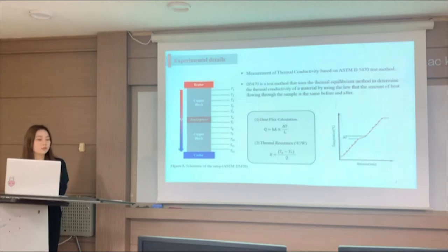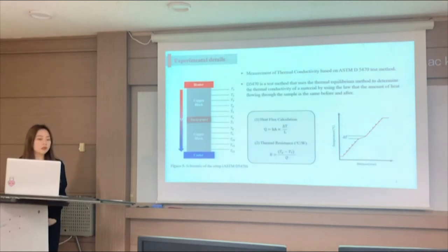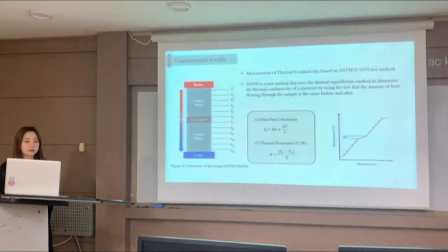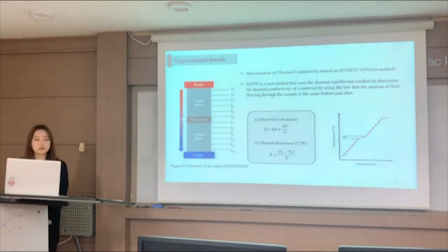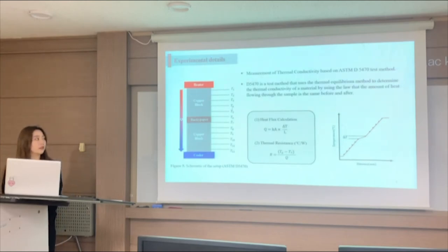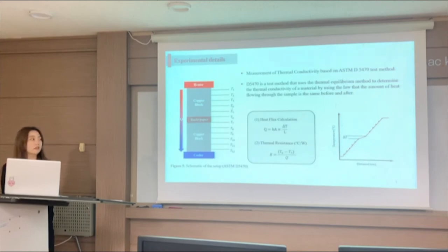The ASTM D5470 equation was used to calculate the thermal resistance value. ASTM D5470 is a test method that uses thermal equilibrium to determine the thermal conductivity of a material, using the law that the amount of heat flowing through the sample is the same before and after. As shown in Figure 5, we drilled six holes in two copper blocks including the surface, inserted thermal probes, and observed the temperature change. Heat is applied on the top and held on the bottom. When the copper block reaches a steady state, the temperature data is used to find the thermal resistance value.